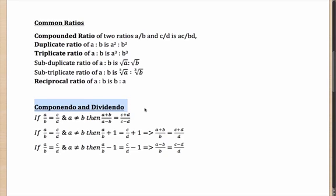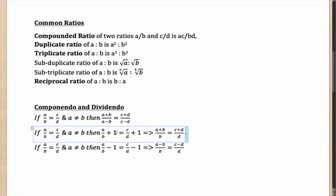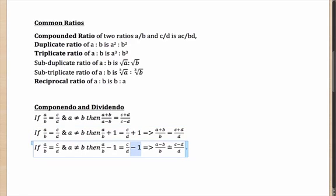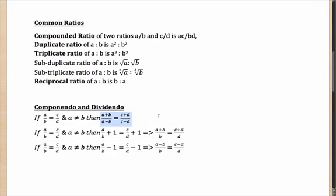Componendo and dividendo are terms very regularly used — you probably did many questions on them in class six or seven. Given that a/b = c/d (where a and b are not equal), then (a+b)/(a−b) = (c+d)/(c−d). This happens because if you add 1 to both sides you get (a+b)/b and (c+d)/d, and if you subtract 1 you get (a−b)/b and (c−d)/d. Dividing the first equation by the second gives (a+b)/(a−b) = (c+d)/(c−d) — that is componendo and dividendo.